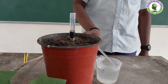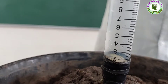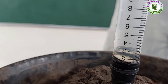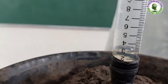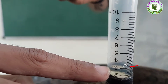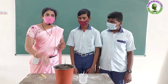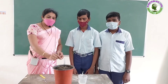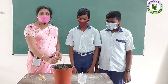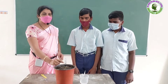Now pour some water in this tube and note the water level. The water level is 3 centimeters. We took some water in the tube because it makes it easy to prove the root pressure — that means easy to observe the change in the water level.